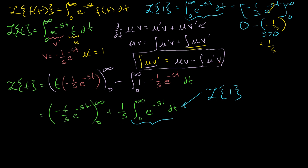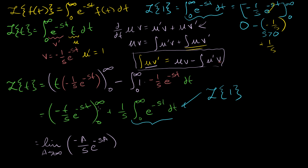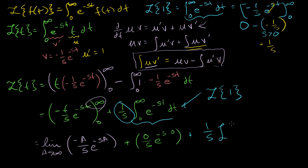I want to write it as the Laplace transform of 1 because we'll see a pattern in the next video. Now let's evaluate the boundary term. That's the limit as a approaches infinity of minus a over s times e to the minus s a, minus the expression evaluated at 0, which gives 0 over s times e to the minus s times 0. Then we add 1 over s times the Laplace transform of 1.